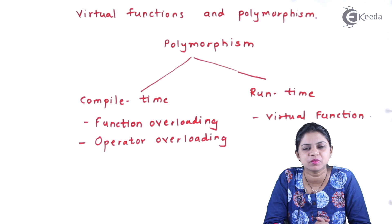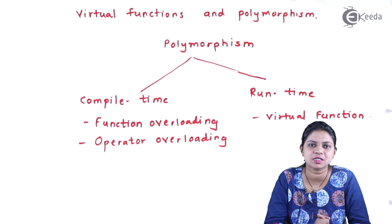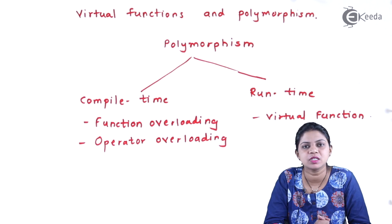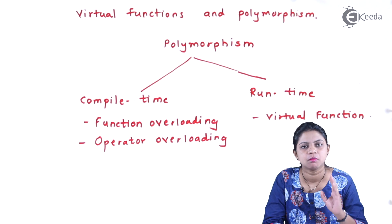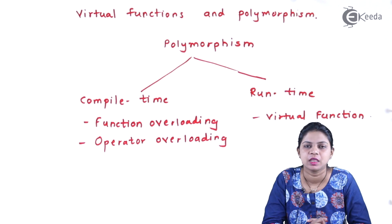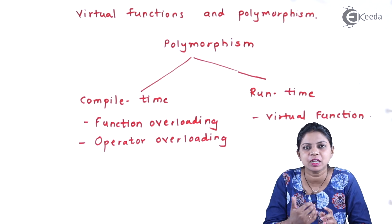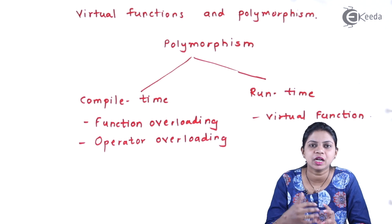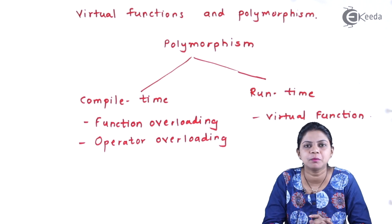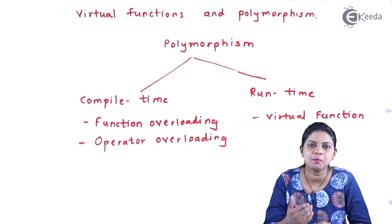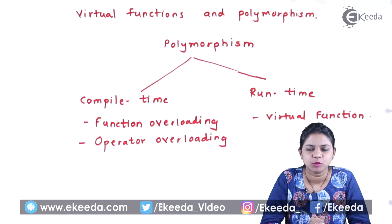Under compile time polymorphism there are two types: function overloading and operator overloading. Function overloading is when we use a function more than once in a program with the same name but with a different number of parameters. The function name remains the same but the signature is different at every place. The compiler invokes the correct function by matching the parameters or the types of parameters at compile time, so it is called compile time polymorphism.